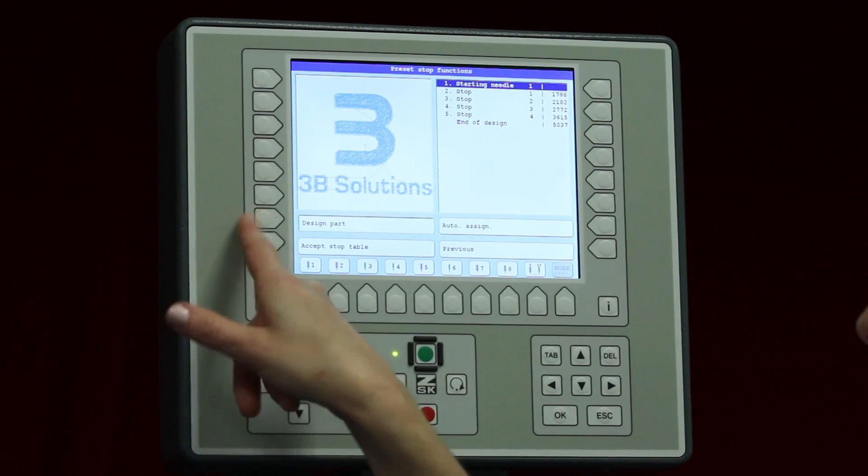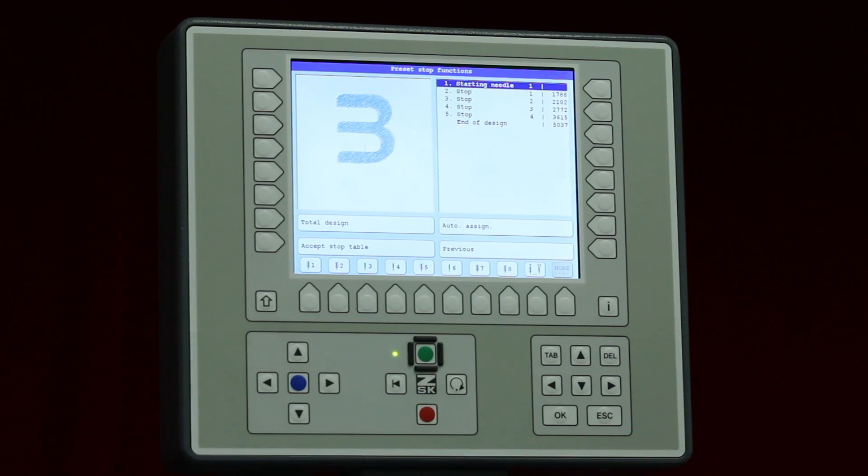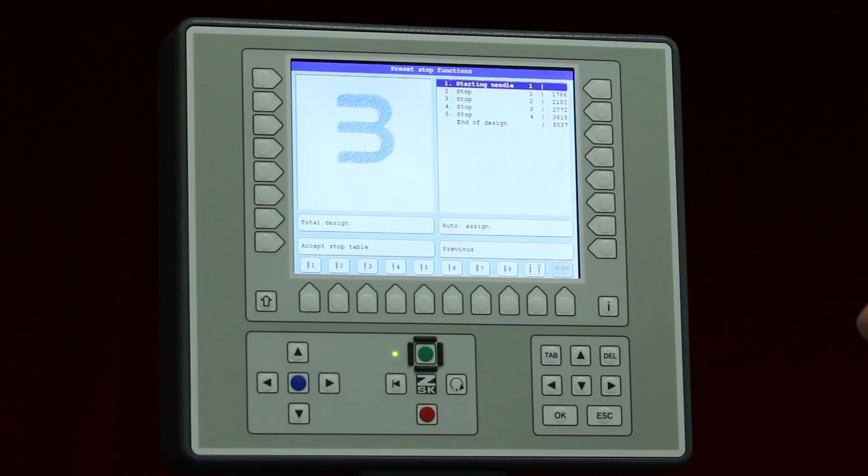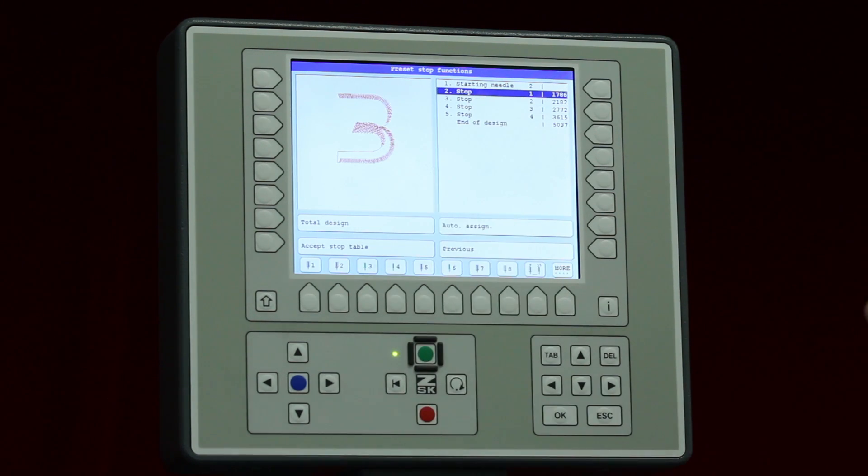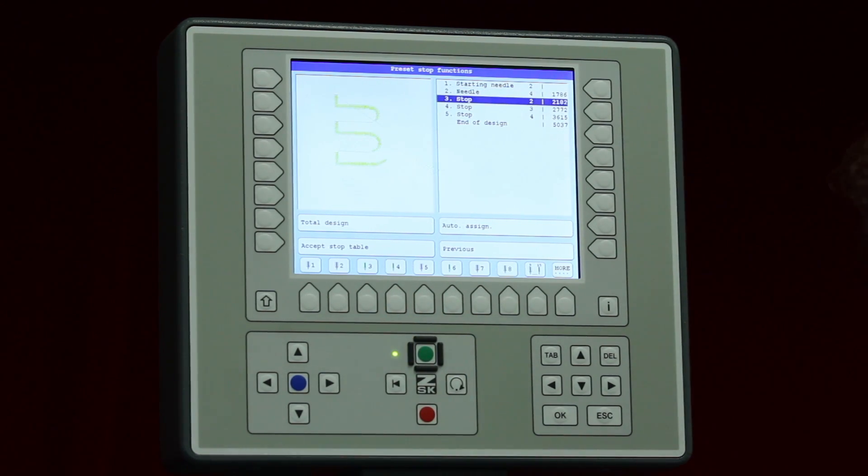I will go ahead and hit design part, so I can see what is the starting needle. I see that this fill right here, and that I would like to program in as number two. It will automatically advance to the next stop, which is the shading. I would like to program that as number four, and then I can keep going with this.